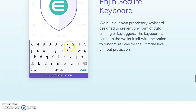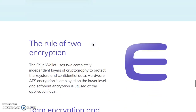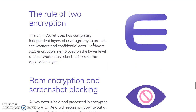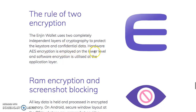There's a secure keyboard with proprietary technology — they randomize the keyboard, which is amazing, and it's very secure. You can go here and read more about the encryption and all they did to build this wallet. RAM encryption and screenshot blocking. Enjin Wallet uses two completely independent layers of cryptography to protect the key store and confidential data.